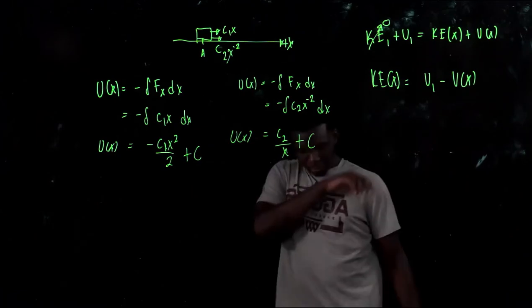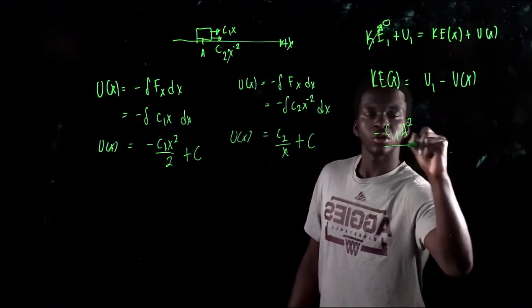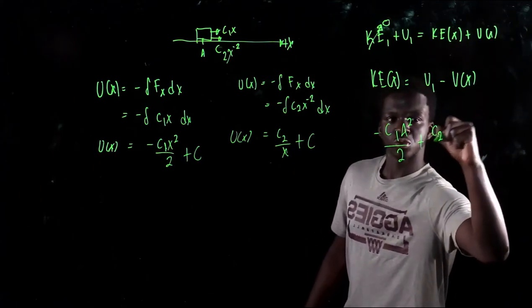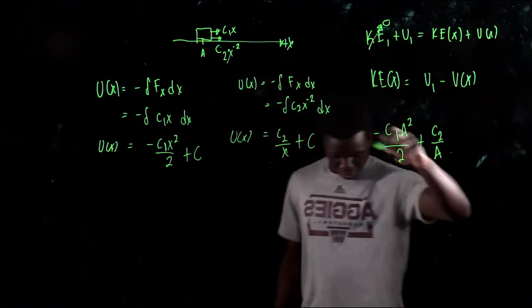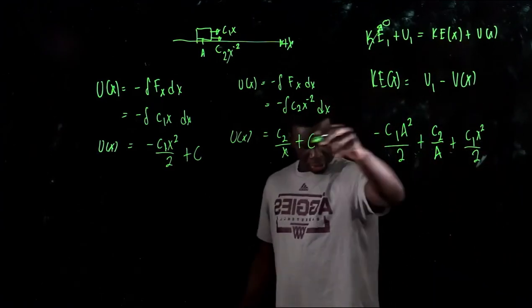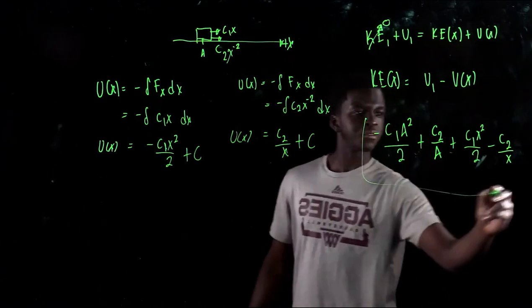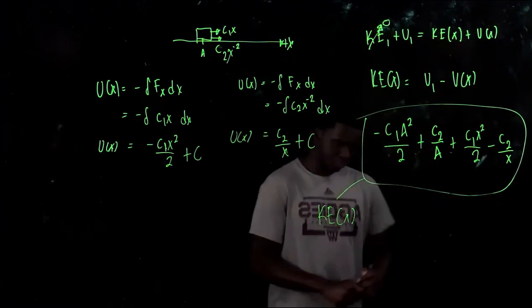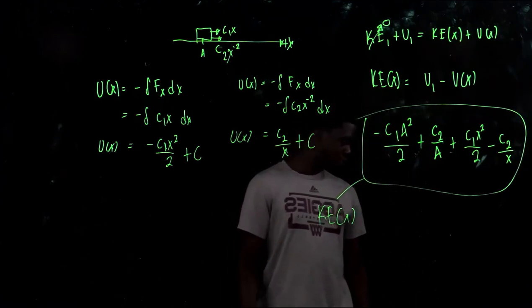Plugging in: U1 at position a is negative c1·a²/2 plus c2/a. Subtracting U(x): minus (negative c1·x²/2) gives positive c1·x²/2, and minus (c2/x) gives minus c2/x. So the final answer is KE(x) equals negative c1·a²/2 plus c2/a plus c1·x²/2 minus c2/x. That's the final answer — let's move on to number four.